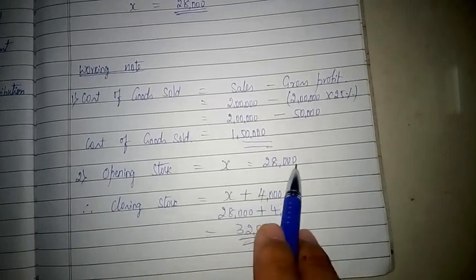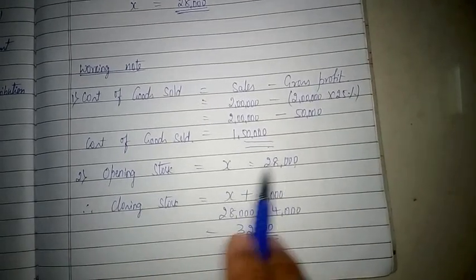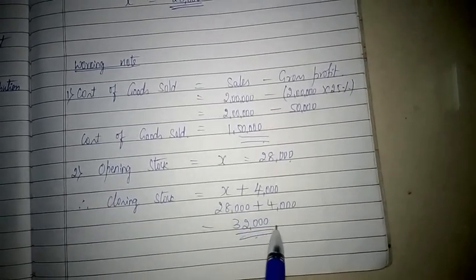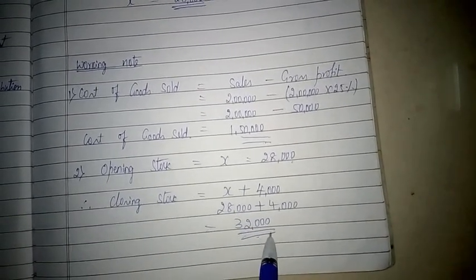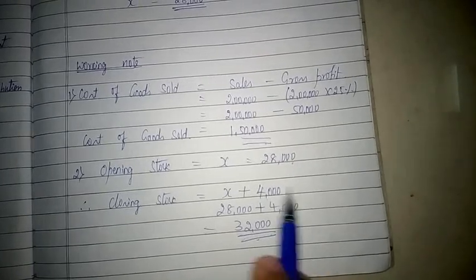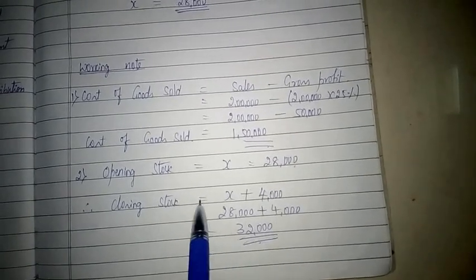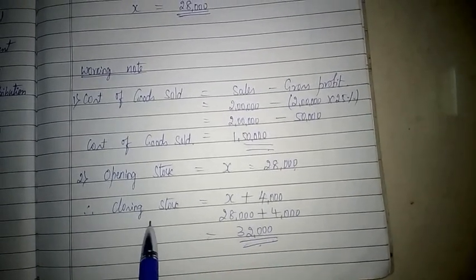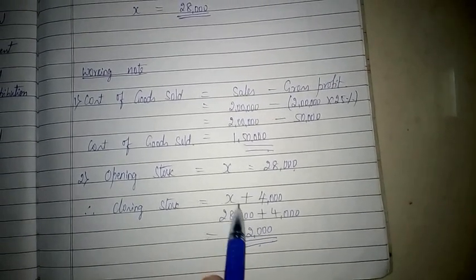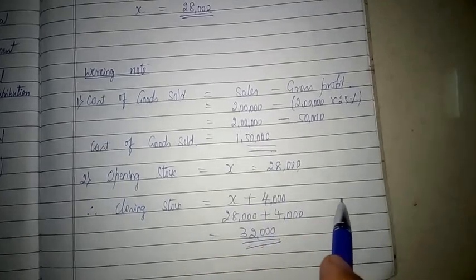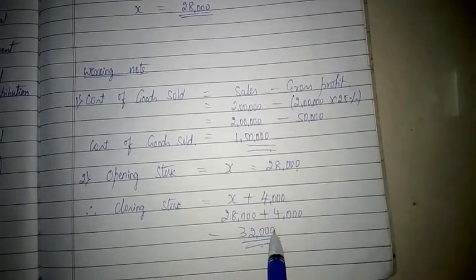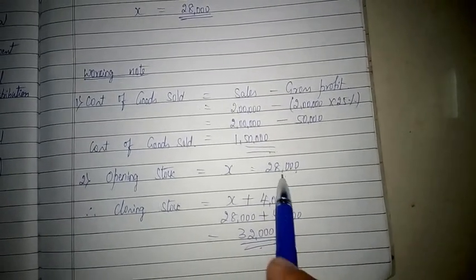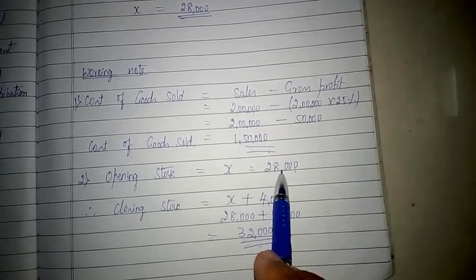If the value of opening stock is 28,000, then the closing stock value will be x plus 4,000, that is 28,000 plus 4,000, which equals 32,000. Therefore, the value of opening stock is 28,000 and the value of closing stock is 32,000. As stated in the problem, closing stock is 4,000 more than opening stock, and here you can compare: opening stock is 28,000 and closing stock is 32,000. Thank you, students.